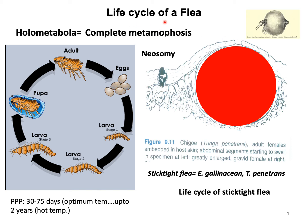The life cycle of a flea demonstrates complete or complex metamorphosis. There are three types of metamorphosis: simple metamorphosis, complete or complex metamorphosis, and ametamorphosis. Complete metamorphosis can be seen in the life cycle of a flea, where the developmental stages — adult, larvae, and pupa — are distinct from one another.